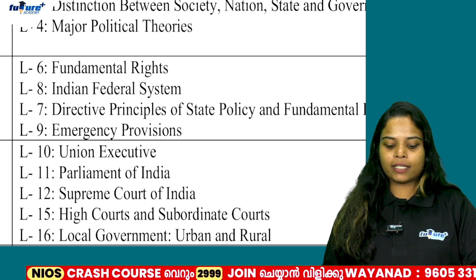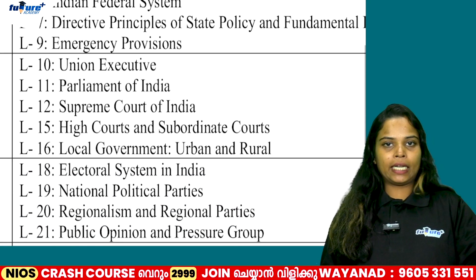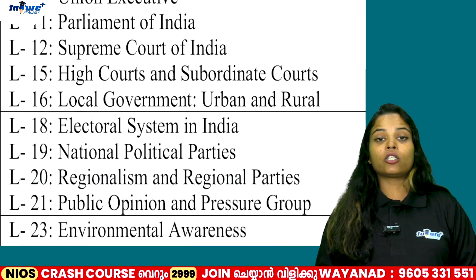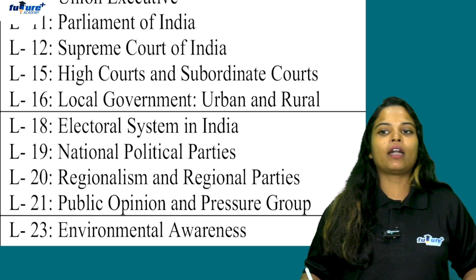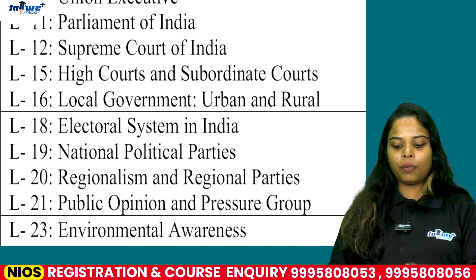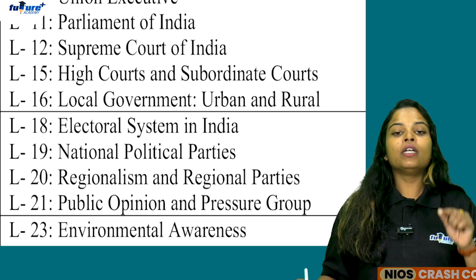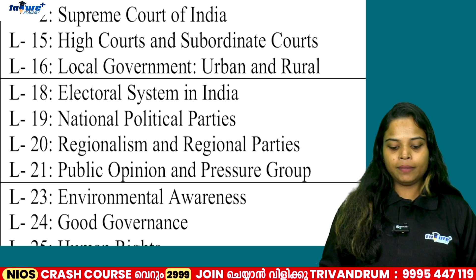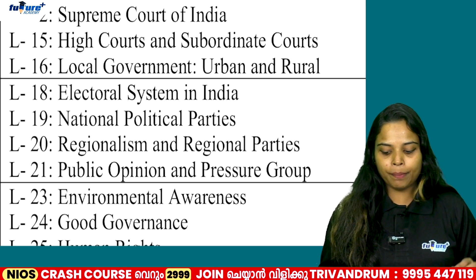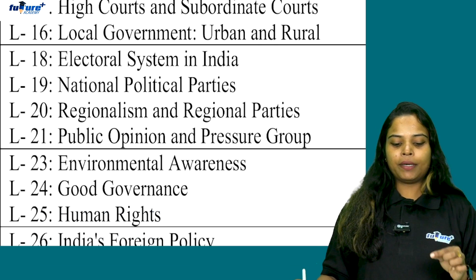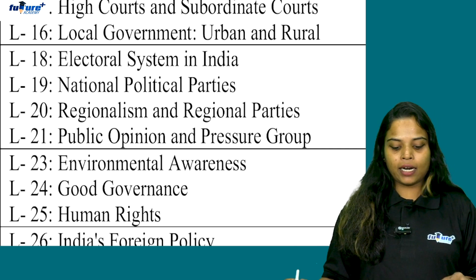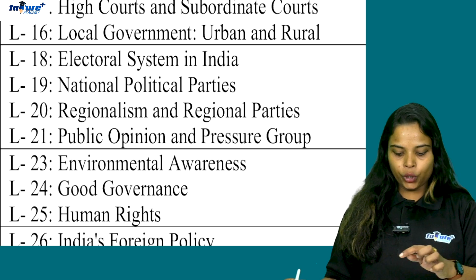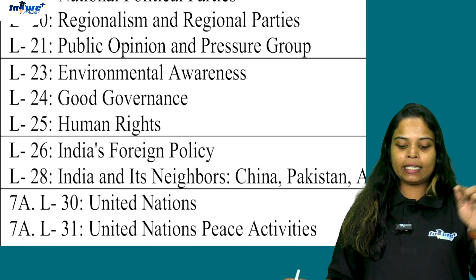Chapter 10 is part of the public examination. The 17th and 18th chapters include the Electoral System in India. Chapter 10 also covers National Political Parties. Chapter 20 is Regionalism and Regional Parties. Chapter 21 is Public Opinions and Pressure Groups. Chapter 23 is Environmental Awareness. Chapter 24 is Good Governance. Chapter 25 is Human Rights. Chapter 26 is India's Foreign Policy.